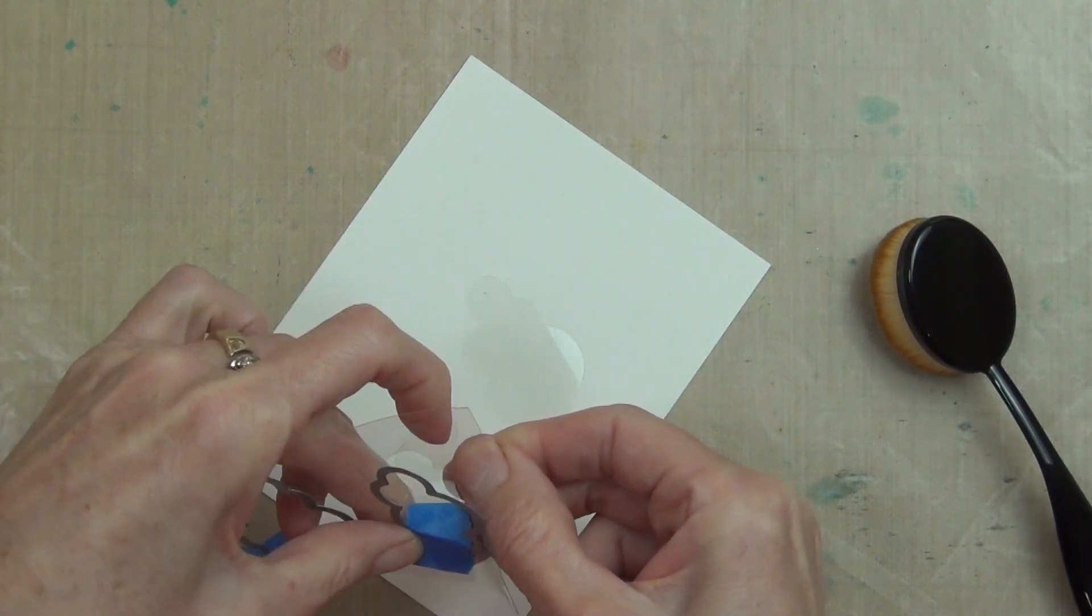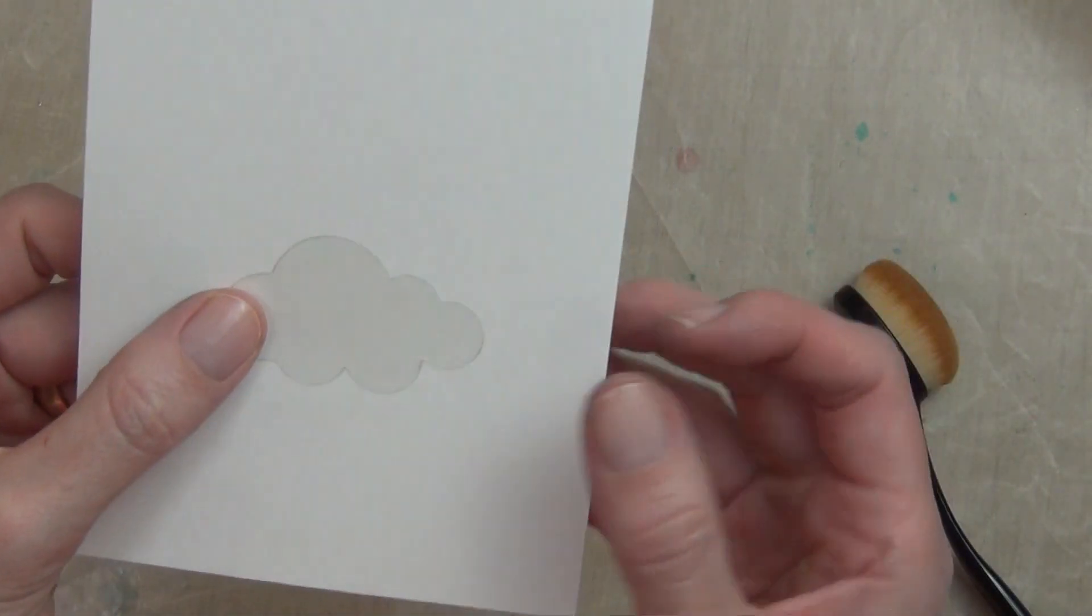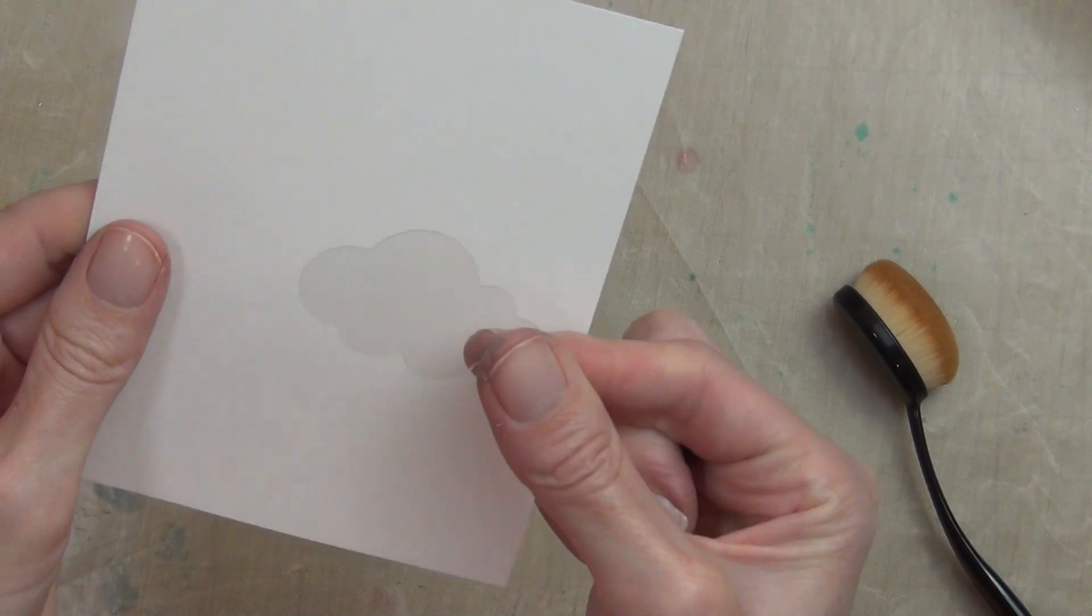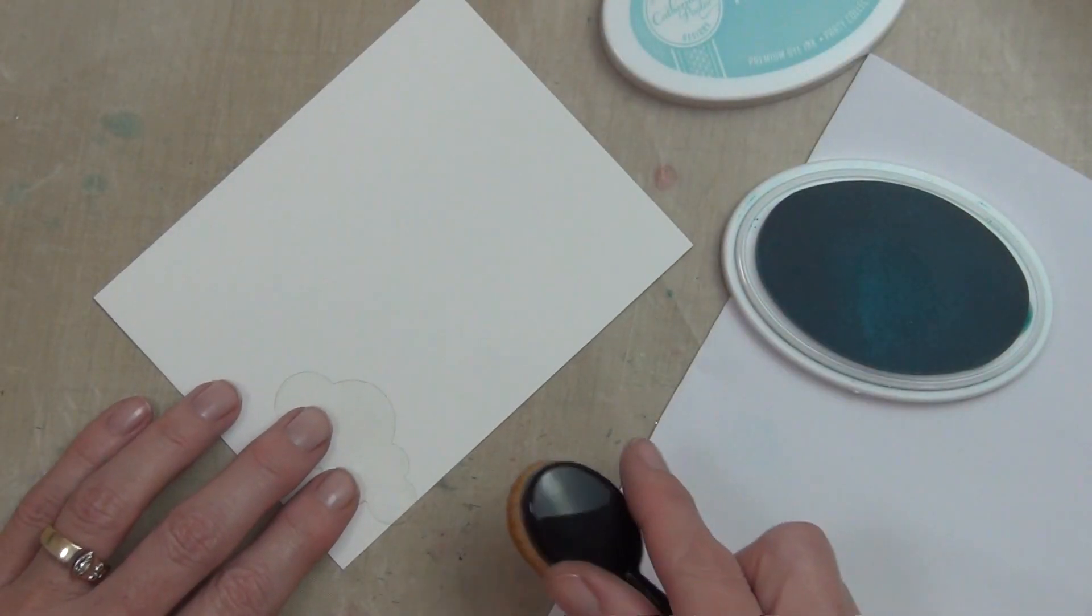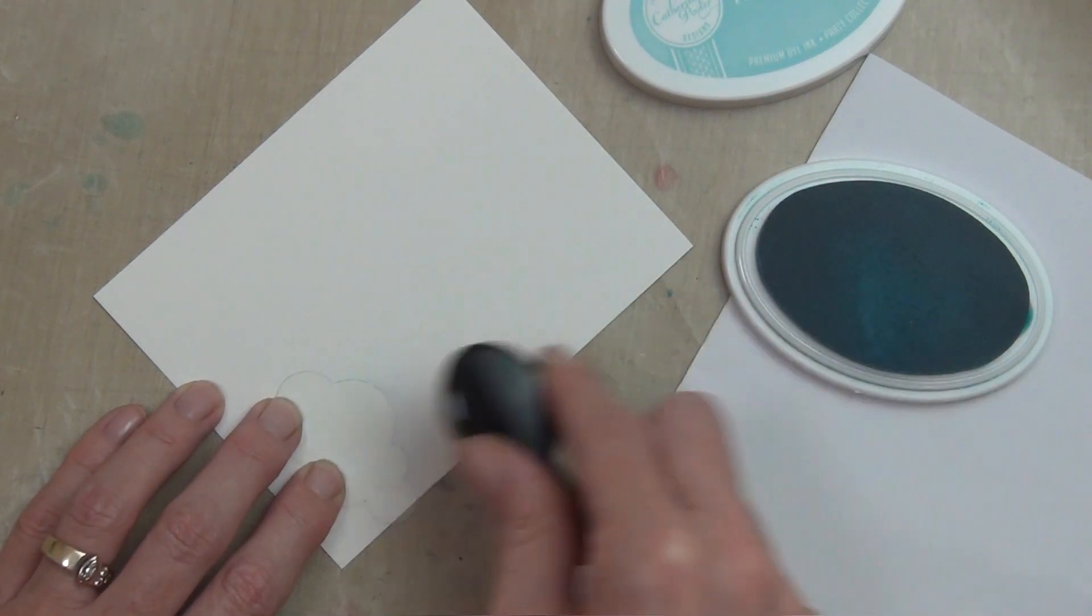Now I want to make my own handmade stencil. I've cut two of the images from acetate and I'm going to use this to add clouds to a piece of Neenah 80-pound cardstock, which I'm going to use as a background.